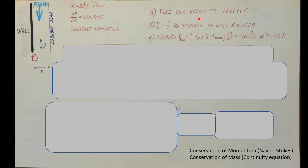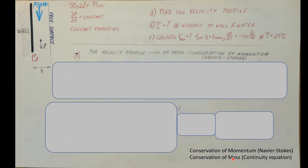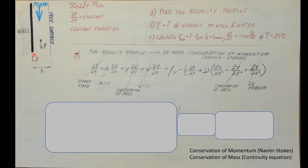To find the velocity profile, we're going to rely on the conservation equations — namely conservation of momentum, otherwise known as Navier-Stokes. While working on that, we're going to rely on the conservation of mass to help cancel out some terms. We need to make sure we have valid reasons for each cancellation.